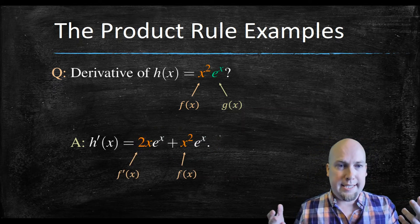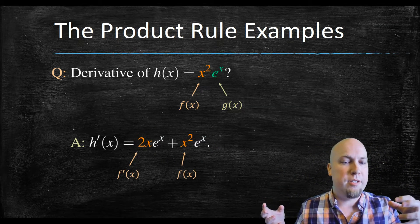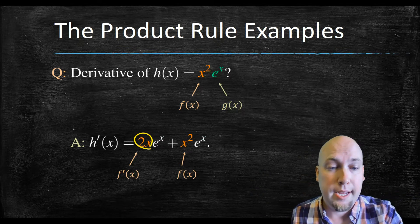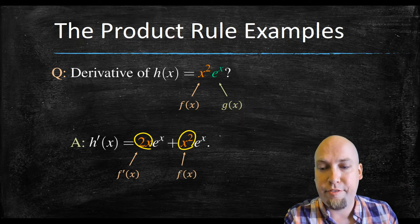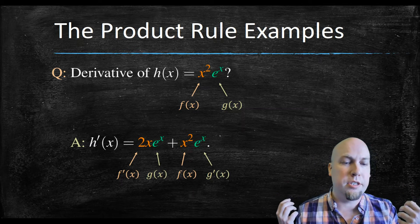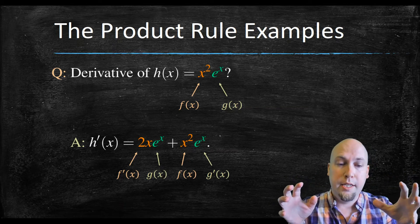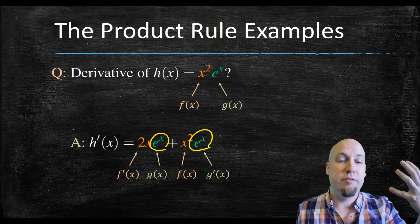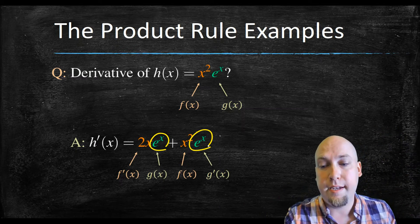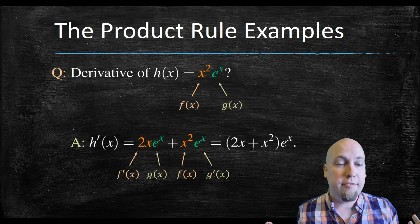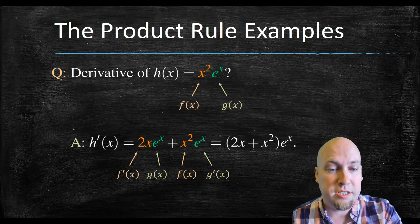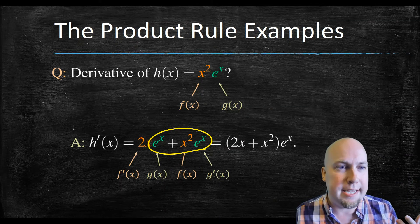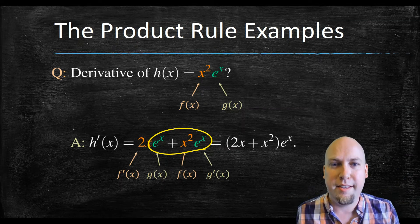The 2x term is the derivative of x squared — that's f prime. The x squared is f itself. The first e to the x is g itself, and the second e to the x is the derivative of g, since the derivative of e to the x is just e to the x again. If you like, you can factor and simplify — there's an e to the x in both terms, so you can factor it out. That last step isn't strictly necessary, but it's nice to simplify when you can.